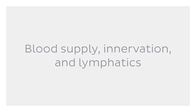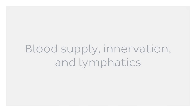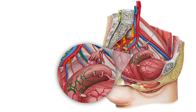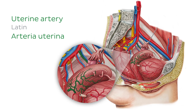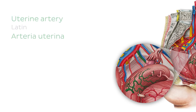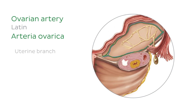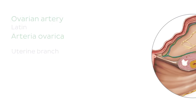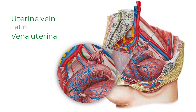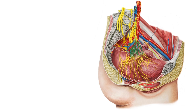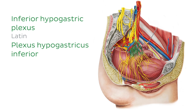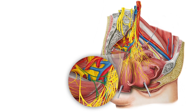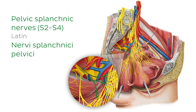Let's move on to the blood supply, innervation, and lymphatics of the uterus. The uterus is supplied by the uterine artery, highlighted here in green, and the uterine branch of the ovarian artery. The venous drainage is carried out by the uterine vein. The sympathetic supply is derived from the inferior hypogastric plexus, seen here highlighted in green, whereas the parasympathetic supply is derived from the pelvic splanchnic nerves.